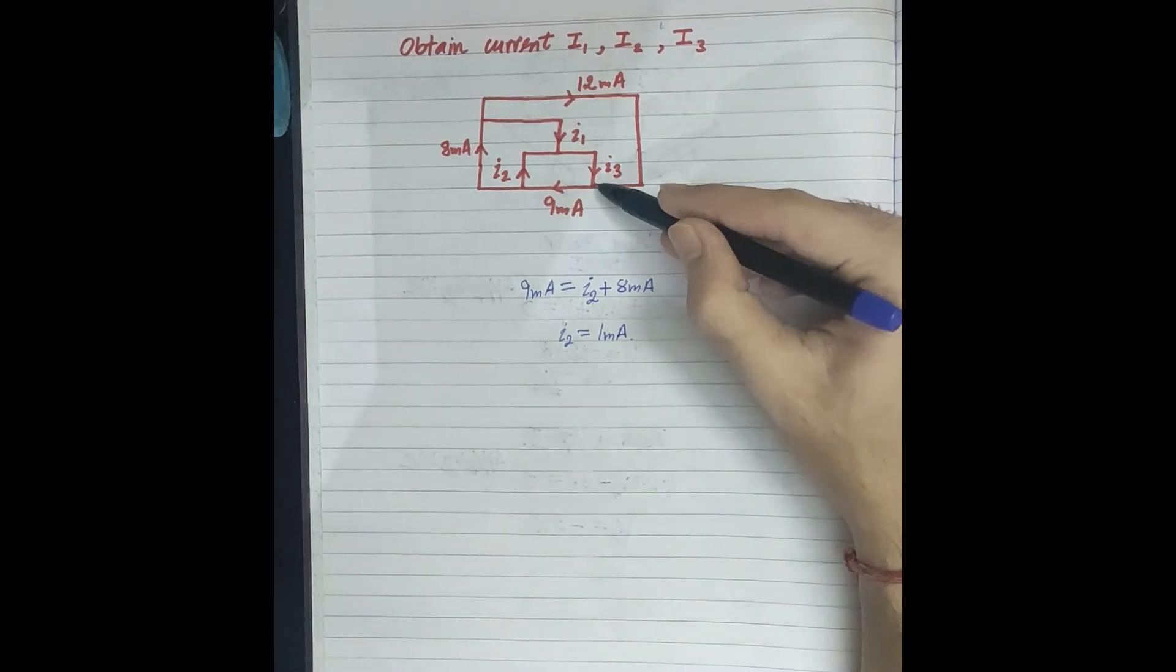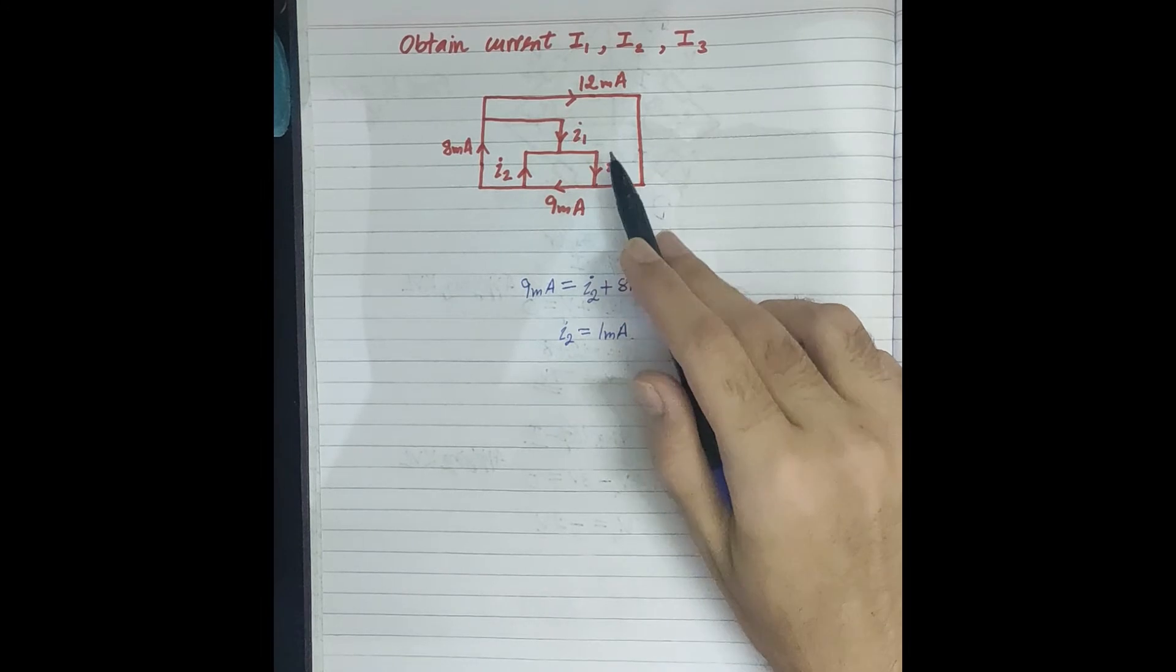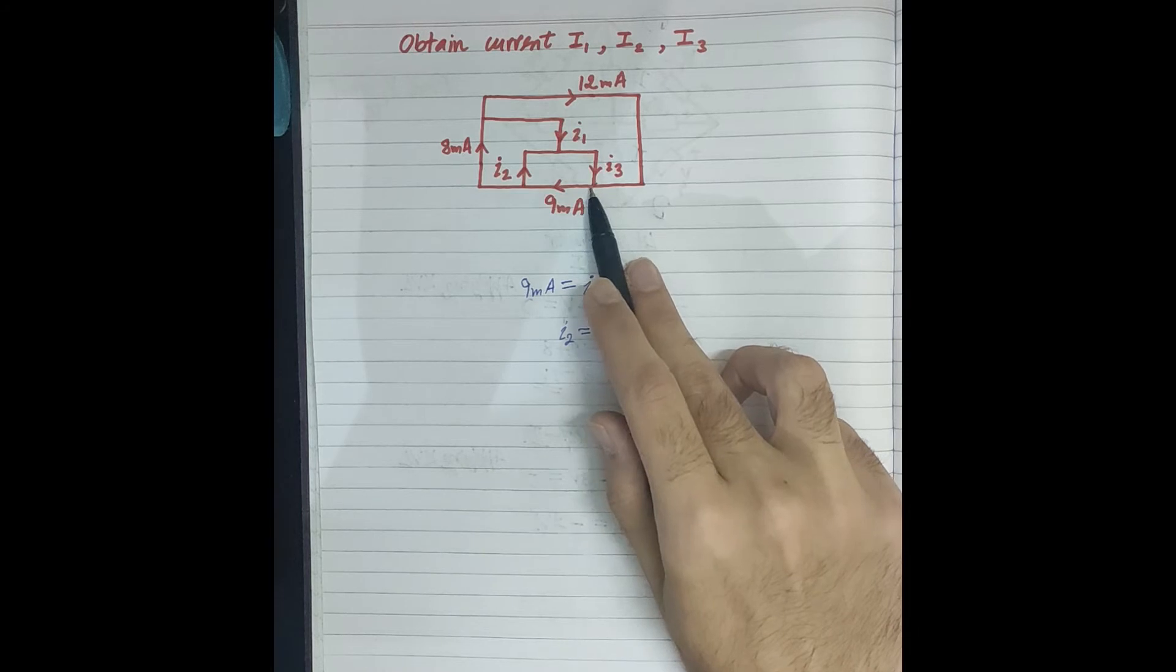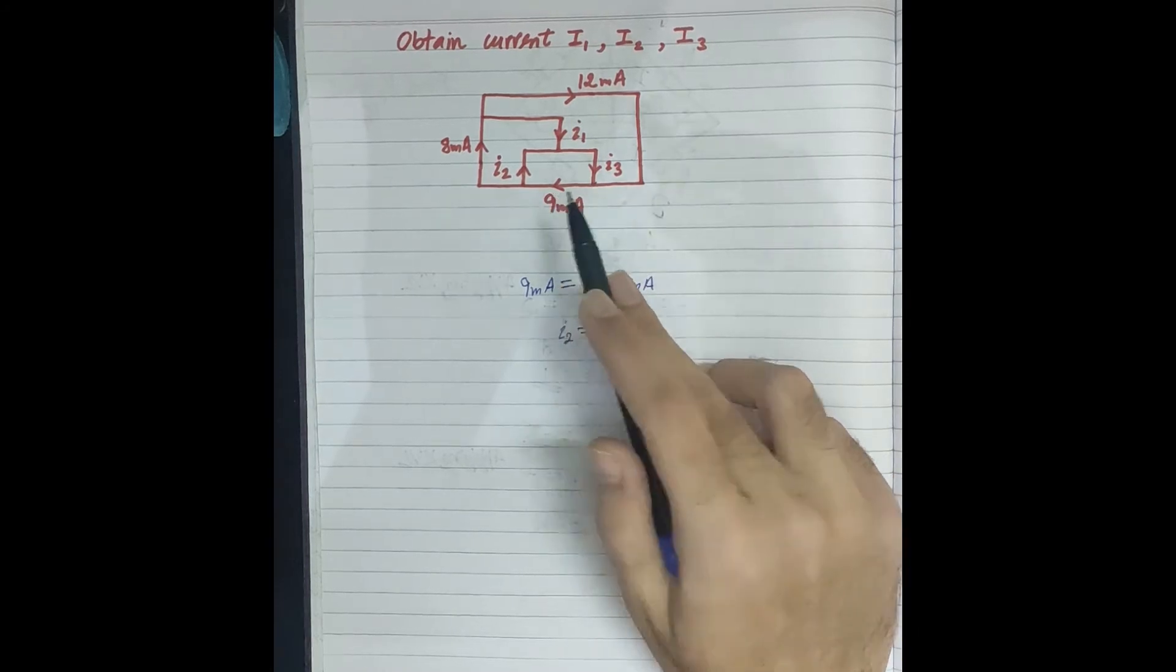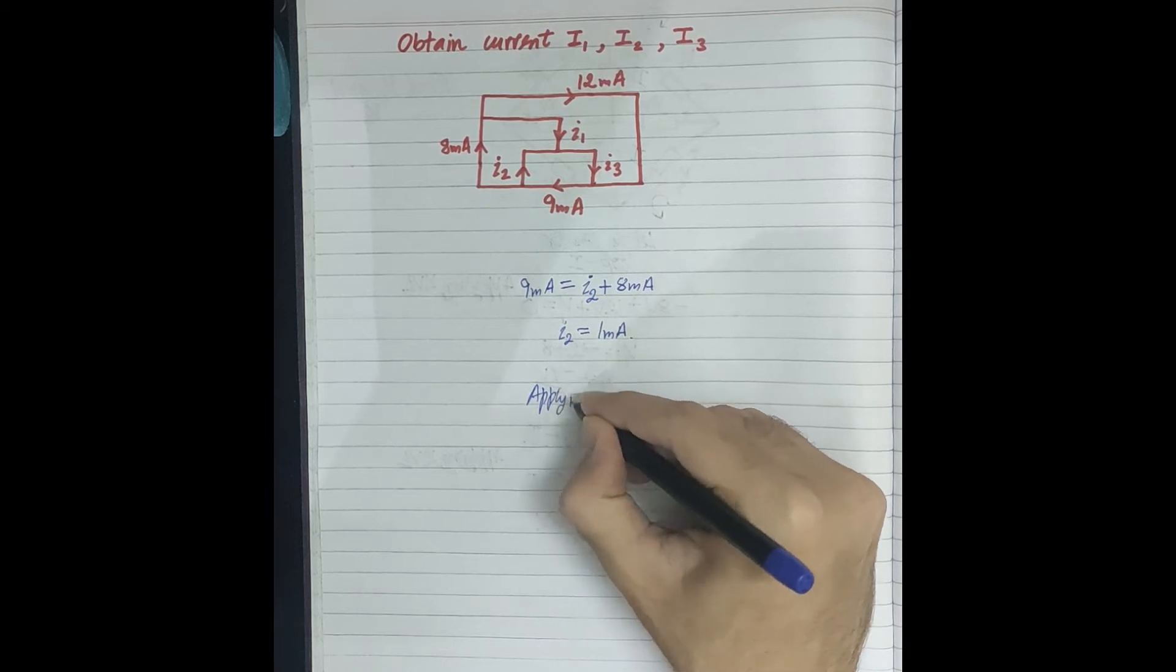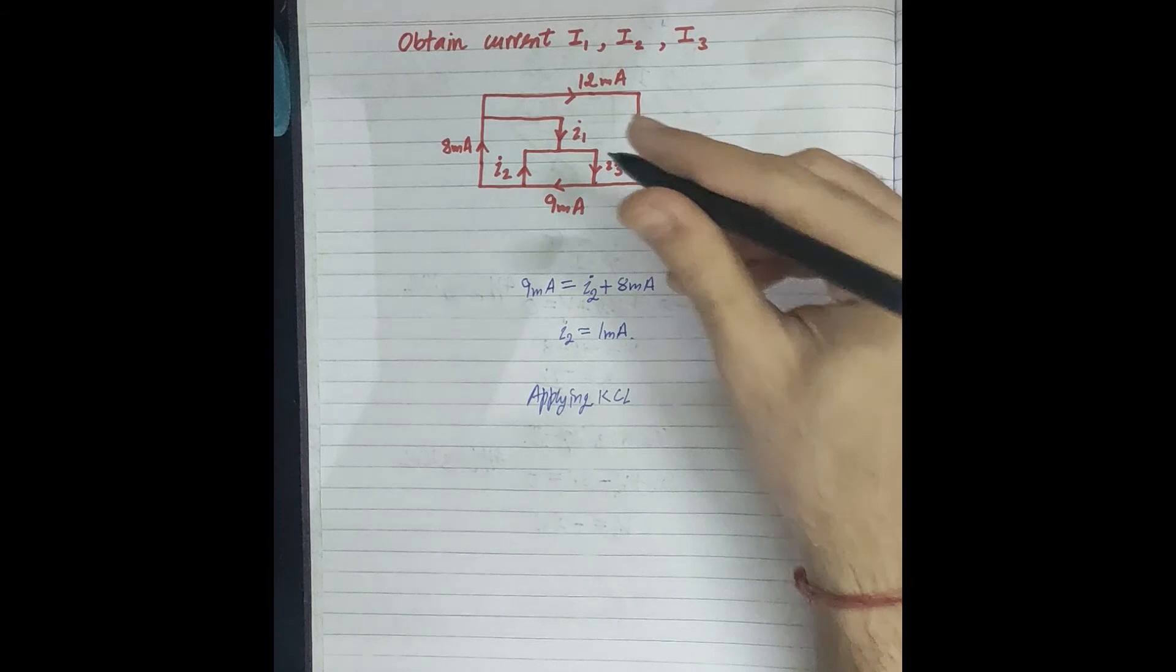Now we consider this junction. Here we can see that I3 and 12 mA are incoming currents, and the outgoing current is 9 mA. So again, applying KCL. If we want to give names to the junctions, we can.